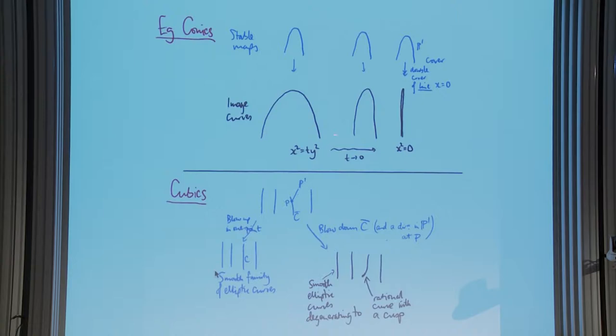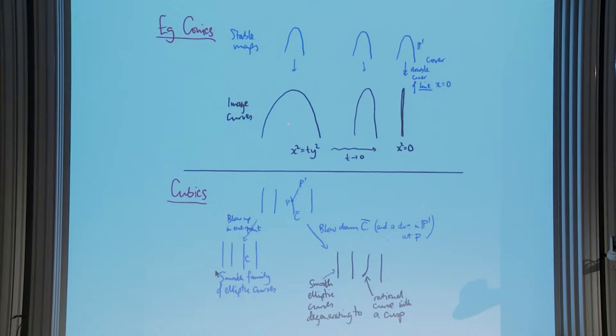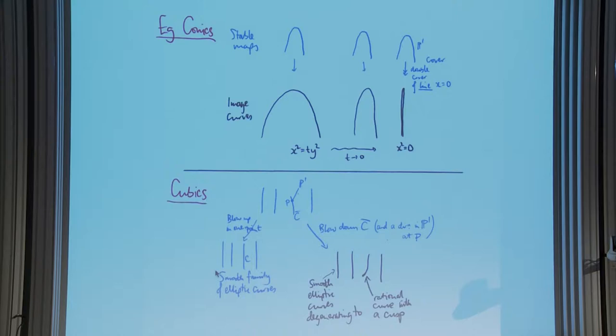An example: conics in P2. You might have conics x² = ty² in P2 degenerating to a double line. In stable map language the degeneration is rather different — you take the embedding of P1 as this conic, and in the limit you can't take the scheme directly because that's not a stable map. The limit of the parameterized curves is the double cover of the line x=0, and the branch points of the double covering are the intersections of nearby conics with this line.